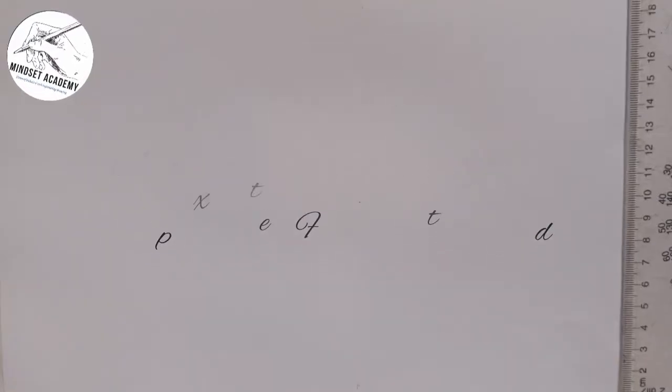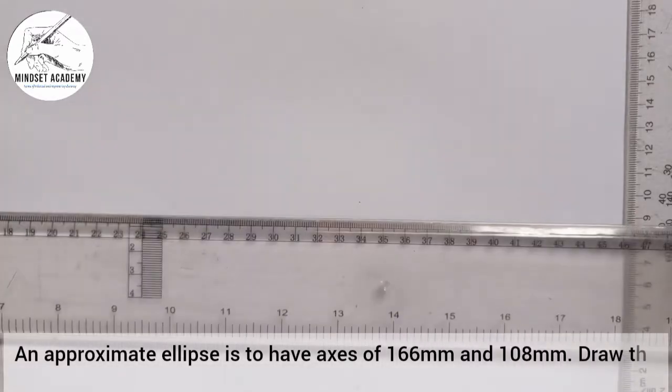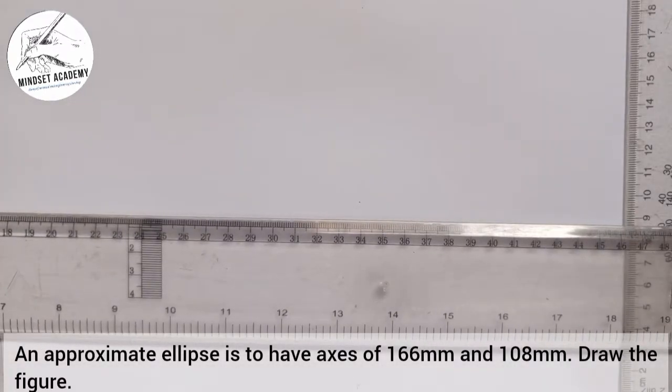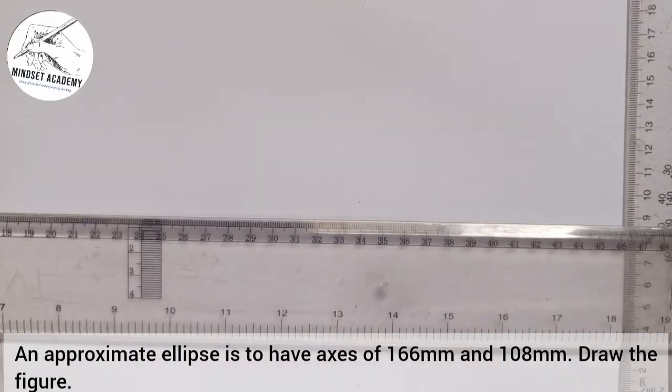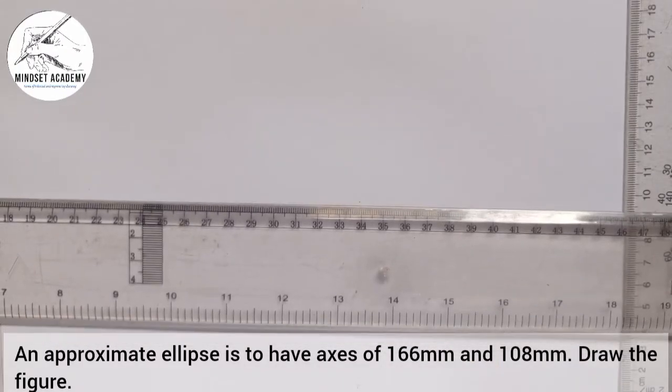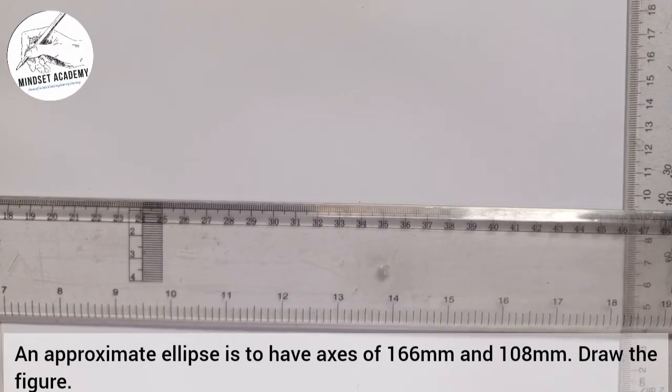The first thing we will do is take your set square, place it on your drawing sheet, and draw a horizontal line this way.